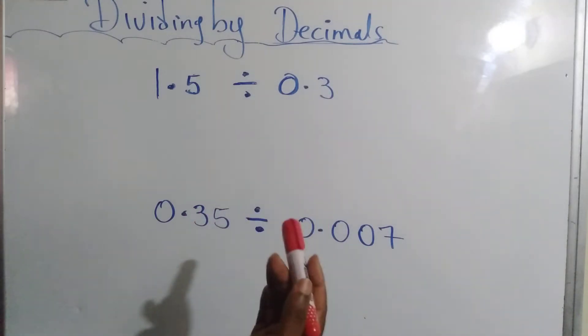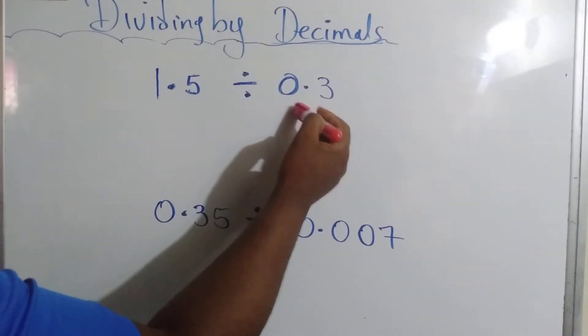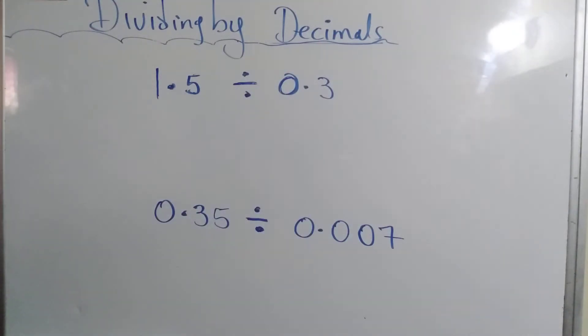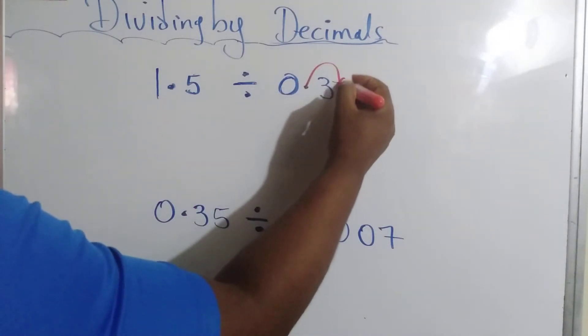We can't really divide by decimal. So first, we're going to convert whatever we are dividing by to a whole number. So we're going to move this decimal point one place.